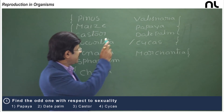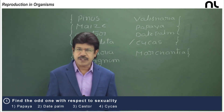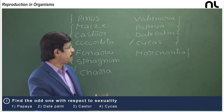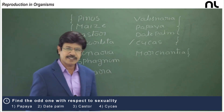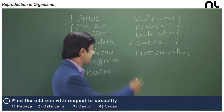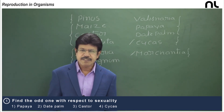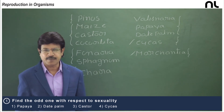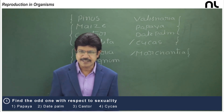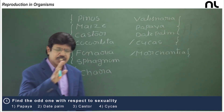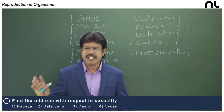Vallisneria, papaya, and date palm are angiosperms that are dioecious sporophytes, and Cycas is a gymnosperm that is also a dioecious sporophyte. Marchantia is a bryophyte in which the gametophytes are dioecious — the antheridiophore is on the male thallus and the archegoniophore is on the female thallus. Whether the sporophyte is monoecious or dioecious, the gametophytes of Marchantia are always dioecious.